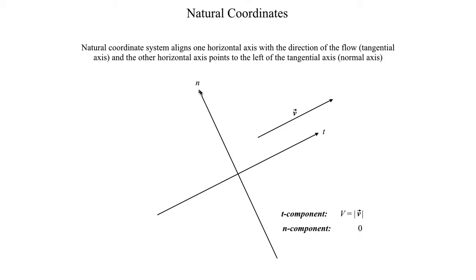And then the other axis, which we call the normal axis, points 90 degrees to the left of the t-axis. And by convention, the positive n direction points 90 degrees to the left of the wind vector. So if the wind vector is pointing in this direction, that means the tangential axis is pointing in that same direction, and the normal axis is pointing 90 degrees to the left of the wind vector.